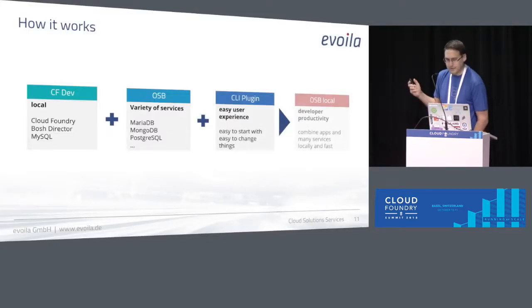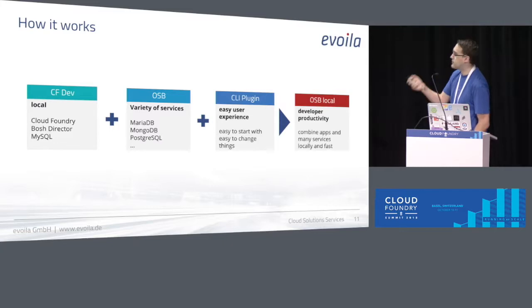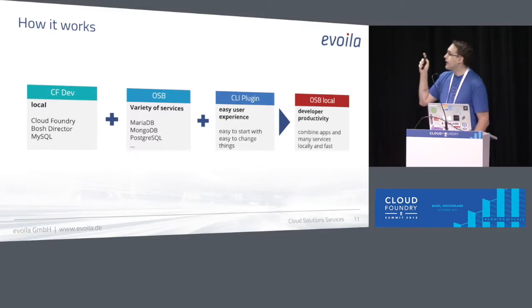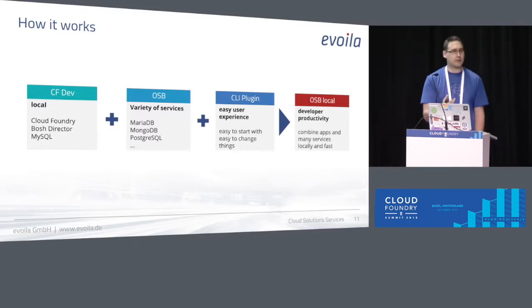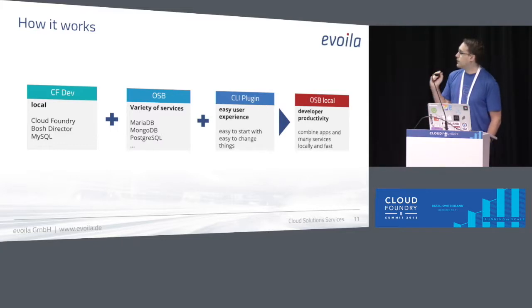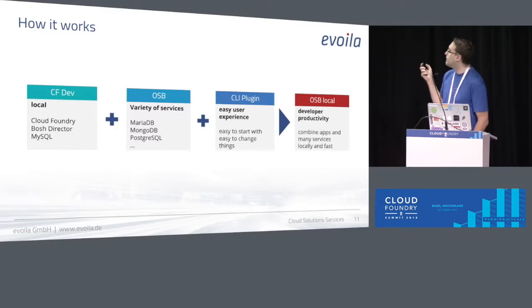So what is the idea? I have my local CF Dev with Cloud Foundry, with a BOSH director, with MySQL. I didn't use CF Local because most service brokers need a BOSH director to deploy something, which we don't have in CF Local. Then I want to have a service broker of some kind, and I want to have a CLI plugin for my Cloud Foundry CLI to start that thing up — to make this service broker available in my CF Dev in an easy way. I don't have to think much about it, I only start working and then I get my marketplace things there. This is then OSB Local as a concept.